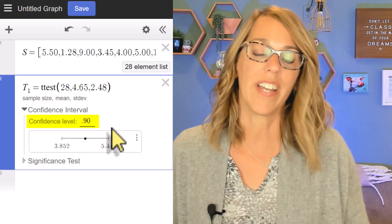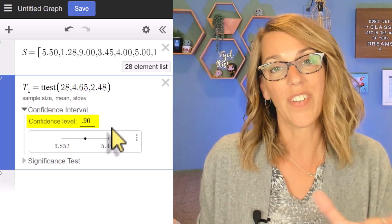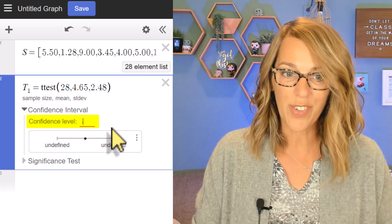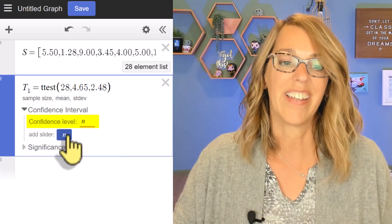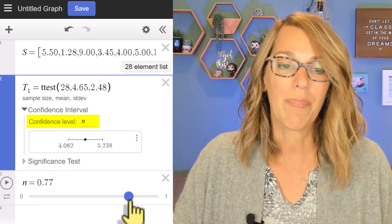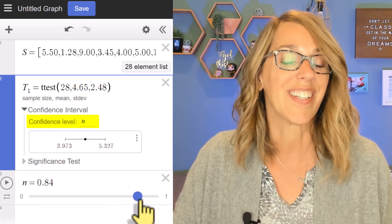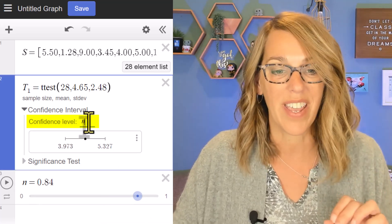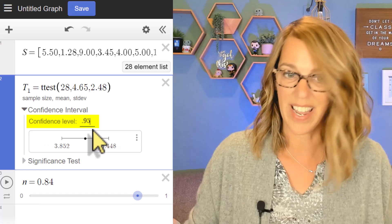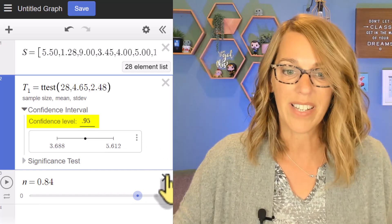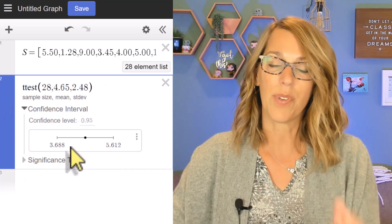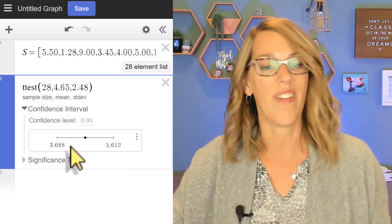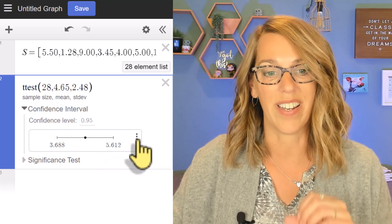You could change it to a 0.90 and it changes those confidence interval limits. You could also change it to an N and then add a slider and play around with that slider to see what different limits you get. But we did want the 0.95. I'm going to get rid of that slider as well. And it gives me the 3.688 and the 5.612.